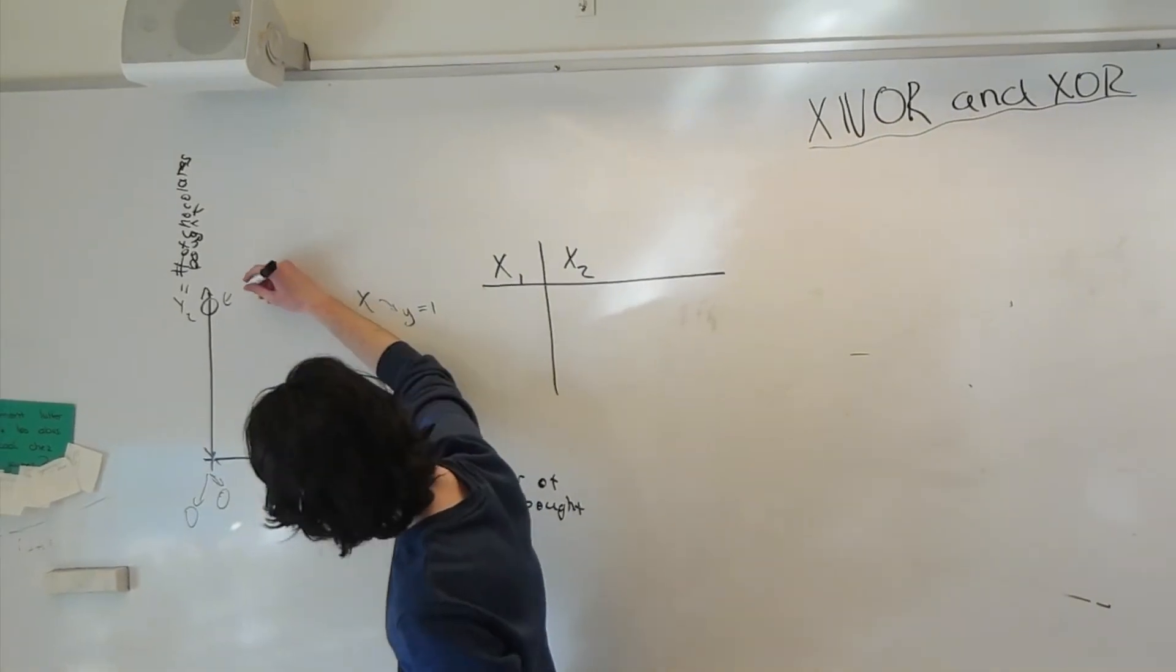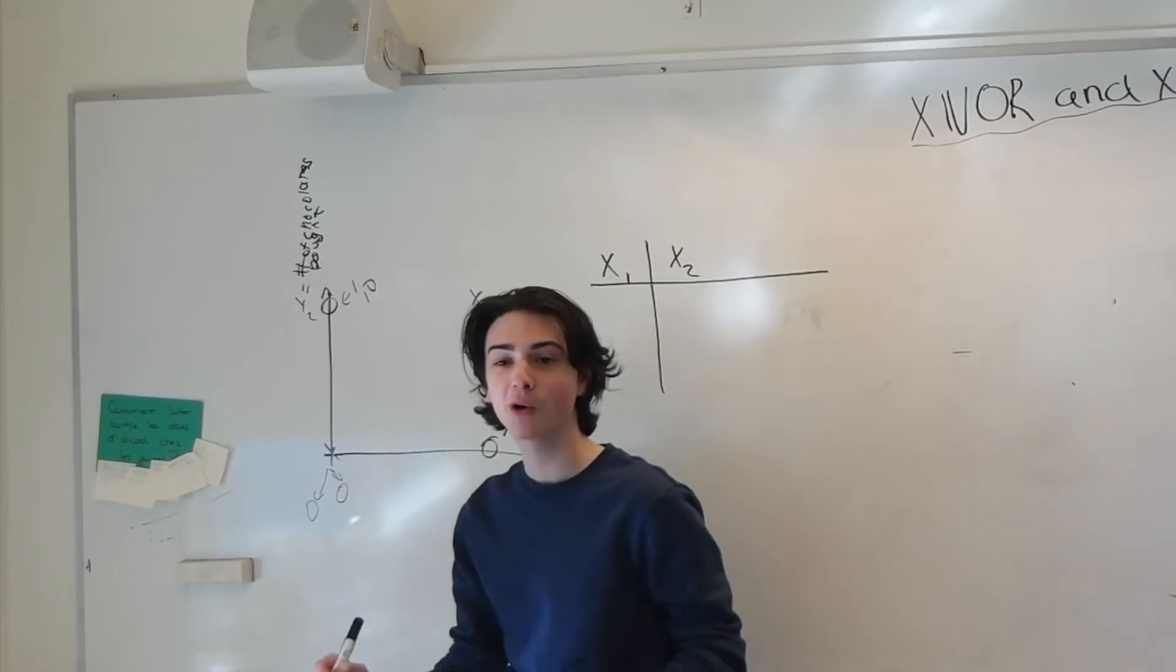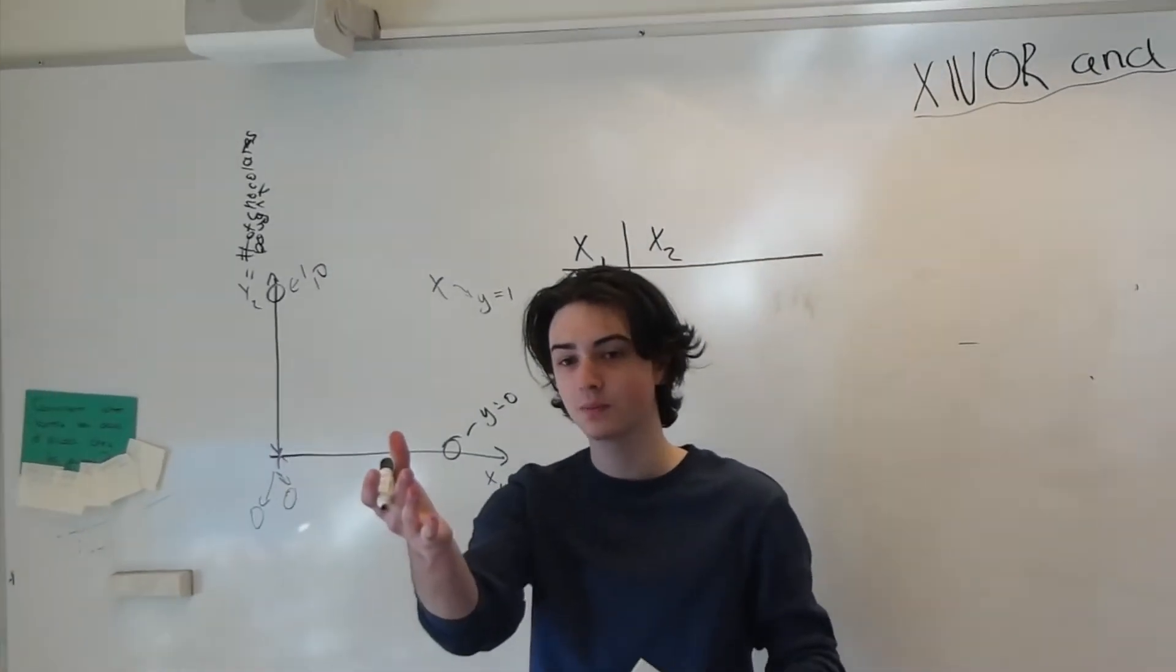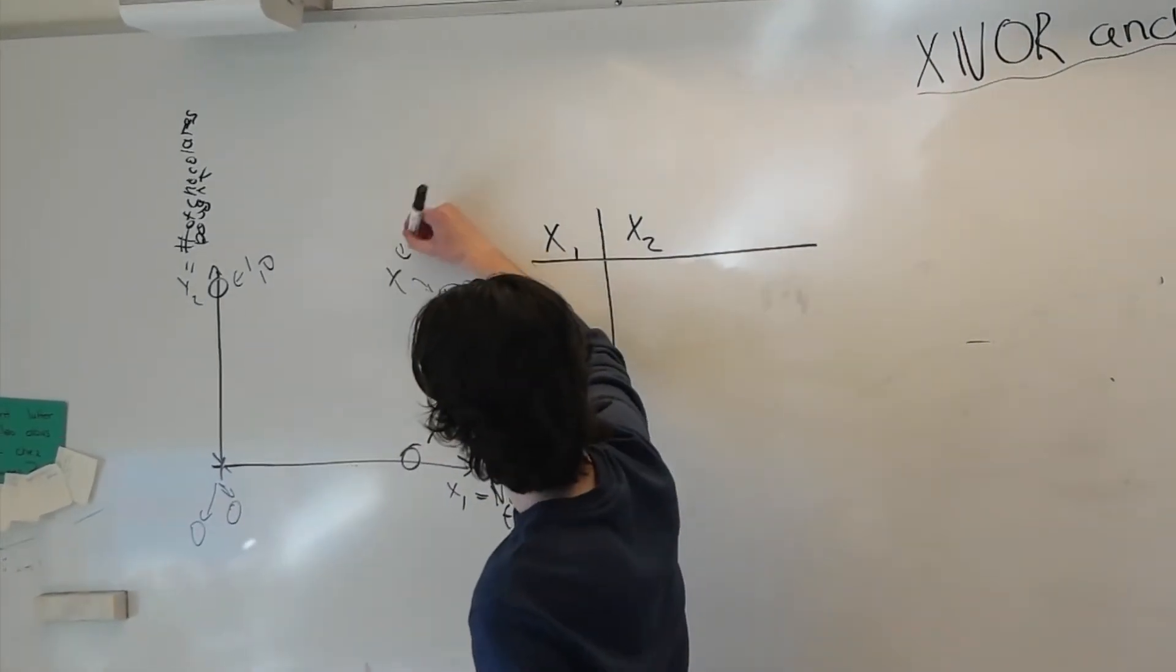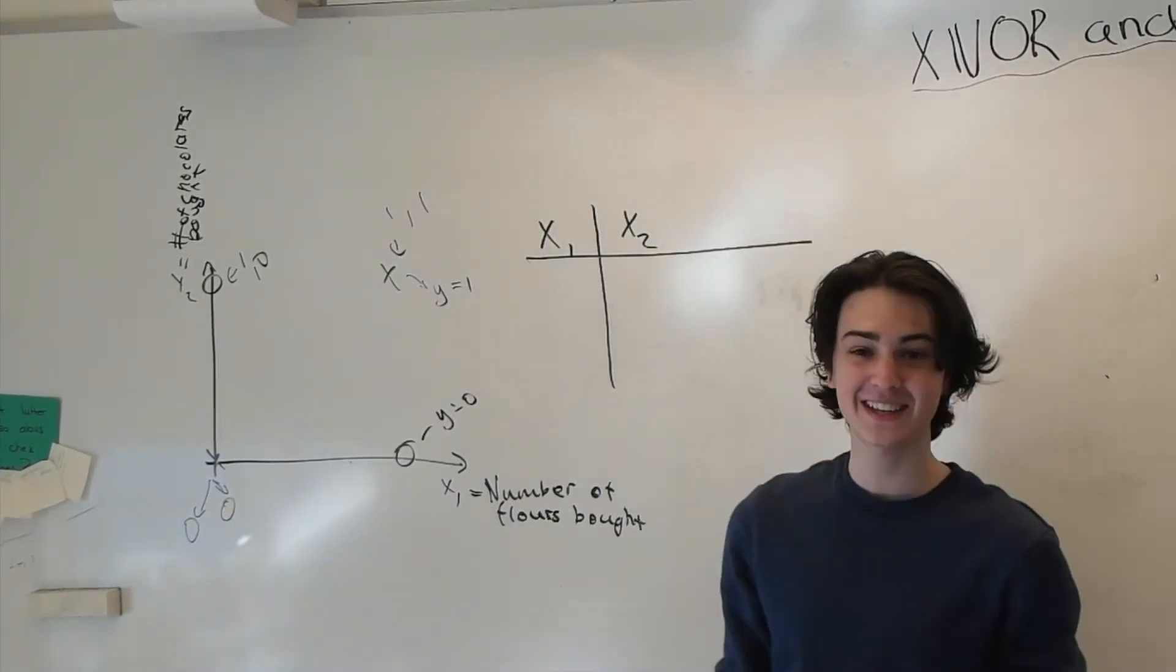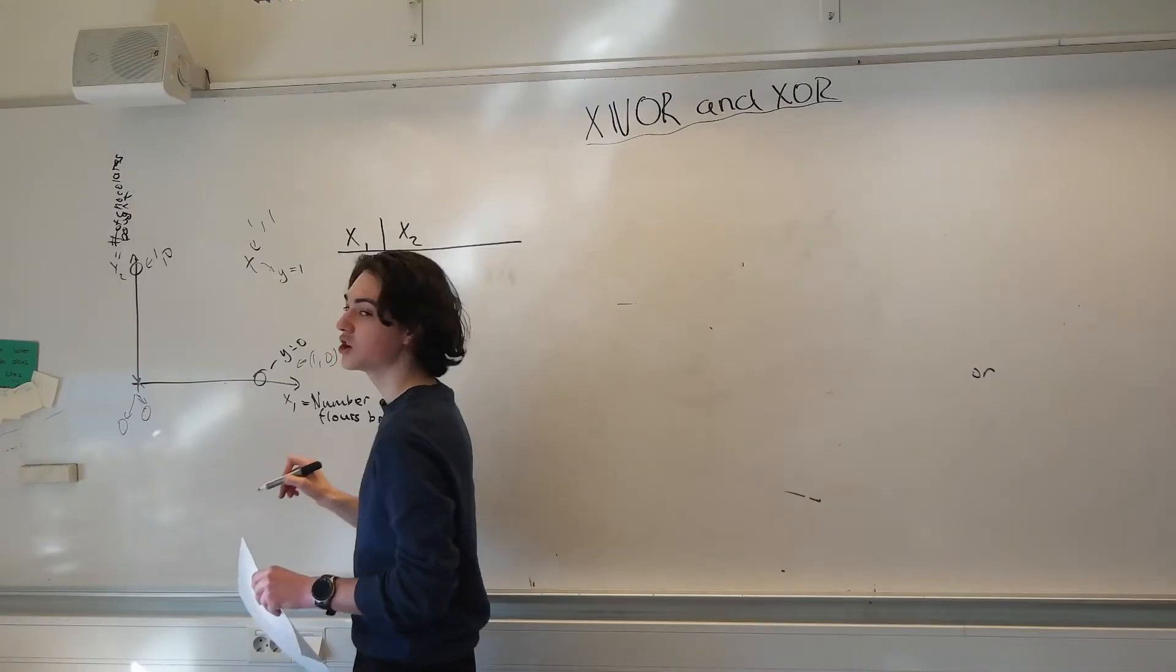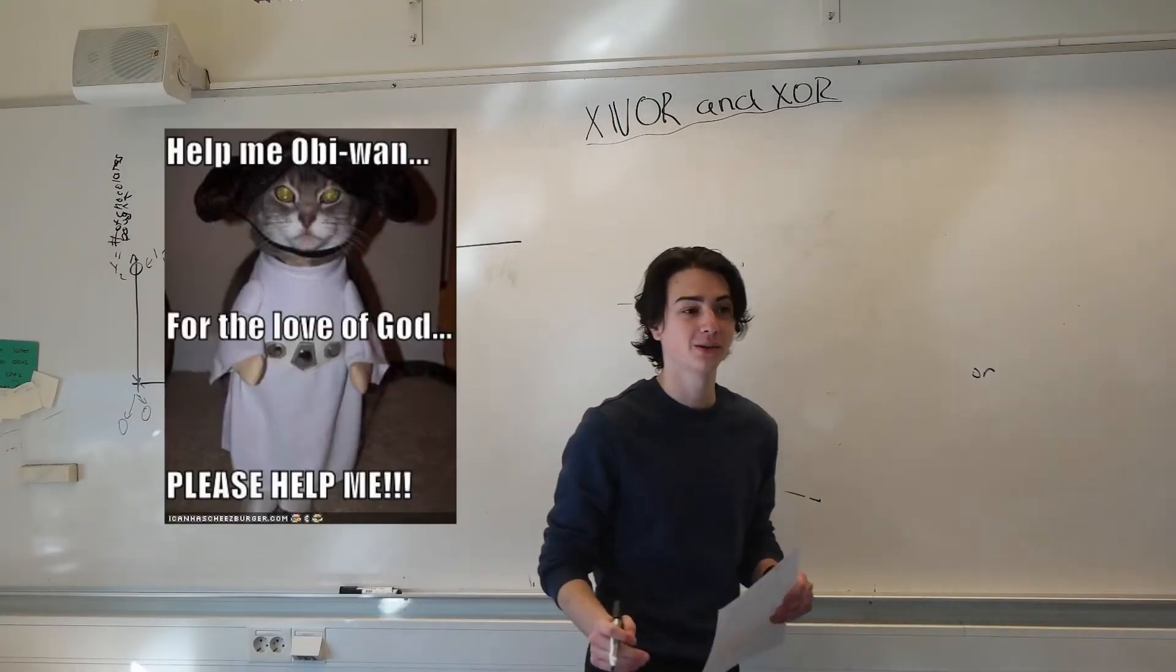If Ryan buys this person one chocolate and zero bags of flour you are not successful. If you buy one bag of flour and one chocolate you are successful. If you buy one bag of flour and zero chocolates she's going to be very concerned for you.